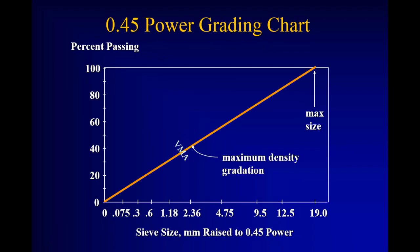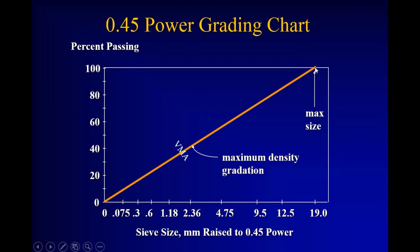The reason we plot it this way is to determine if a gradation is going to work for us and what we need to do to adjust bin split in certain materials. If we take this 0.45 power chart and put a dot at the origin — zero percent passing, zero size — and put a dot up at the maximum aggregate size, here our 12.5 mix with a nominal maximum aggregate size, 19 millimeter or three-quarter inch is the maximum size, and draw a straight line — that's called our maximum density line.